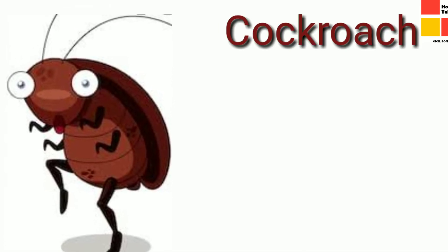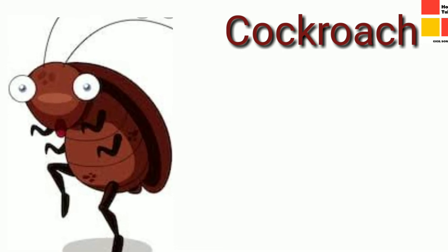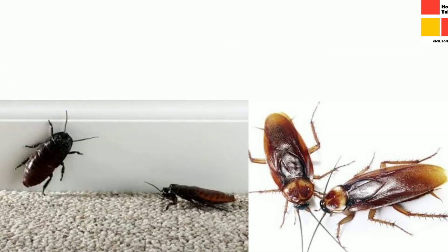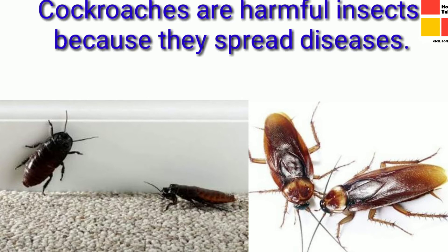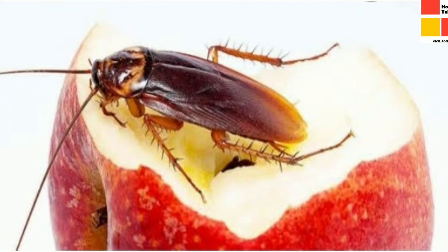Next, we are going to study about cockroach. Cockroaches are quite big insects, isn't it? They live in dark and cold areas in our homes. They are also harmful insects. Do you know why? They also will spread diseases. What is their color, children? Yes, dark brown, isn't it?